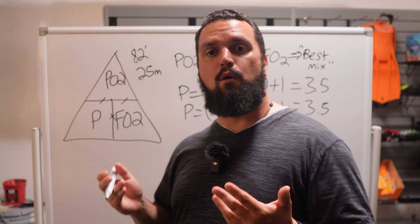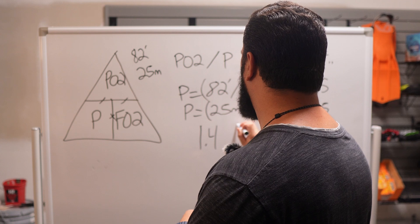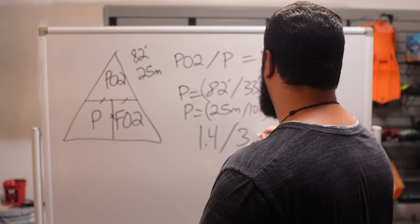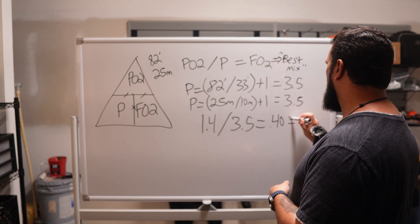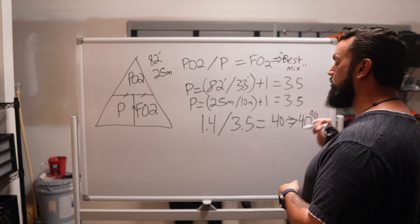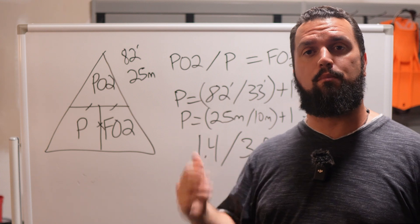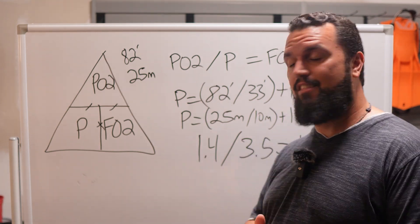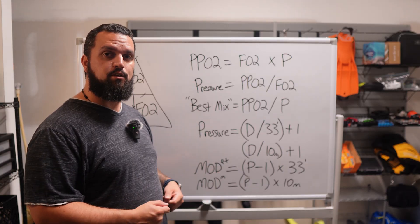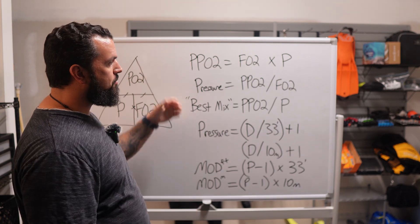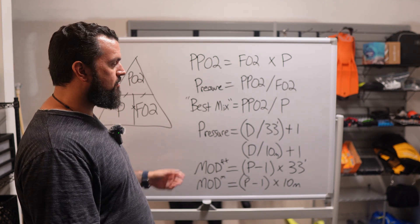Now we take our PPO2 of 1.4 and divide it by our pressure of 3.5, which equals 0.40 — that's 40% nitrox. So the best mix for a 25-meter or 82-foot dive is Nitrox 40, which also happens to be the recreational nitrox limit. It really is that simple using Dalton's Triangle. Here are all the formulas written together so you can screenshot them: PPO2, pressure, best mix, pressure-from-depth, and MOD — both in feet and meters.